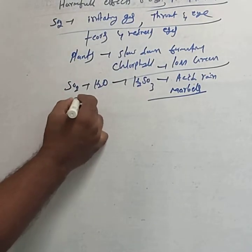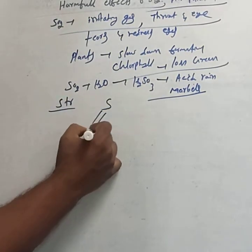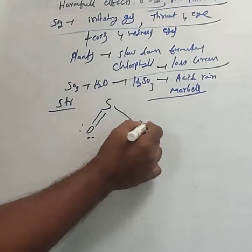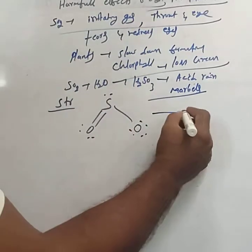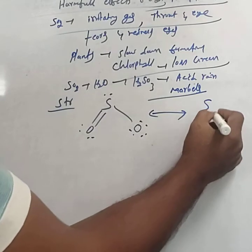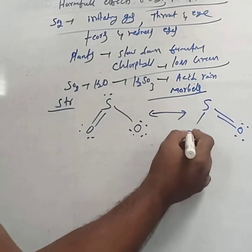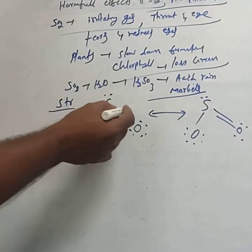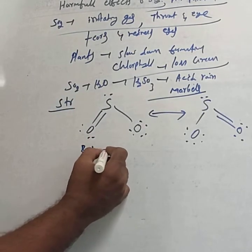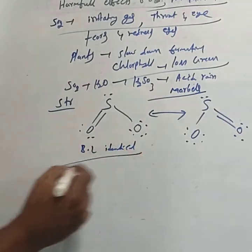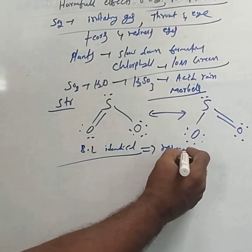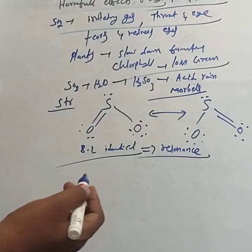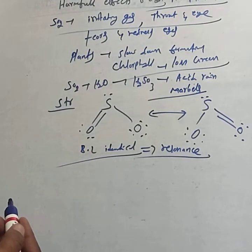Now consider the structure of SO₂. The structure of SO₂ shows sulfur with a double bond to one oxygen and a single bond to the other, with lone pairs on each atom, and a resonating structure. Due to resonance, all sulfur-oxygen bond lengths are identical and are covalent in nature.